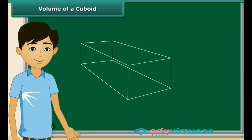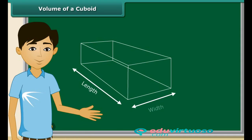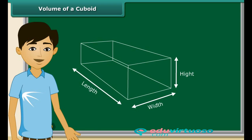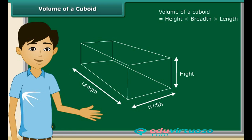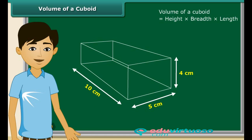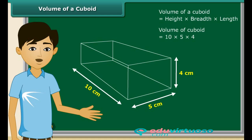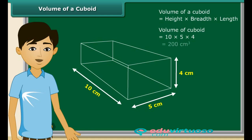Look at this cuboid. We know it is a three-dimensional shape having dimensions length, breadth and height. It's very simple to calculate the volume of a cuboid — just multiply height, breadth and length and you will get the volume. The volume of this cuboid is 200 cubic centimeters.